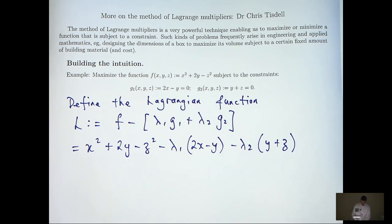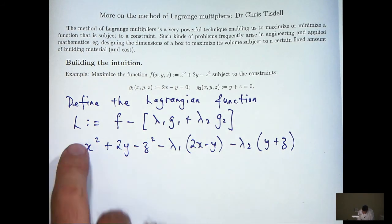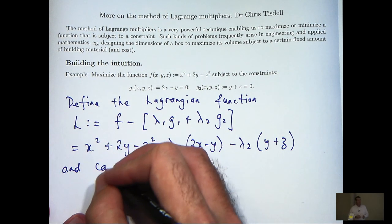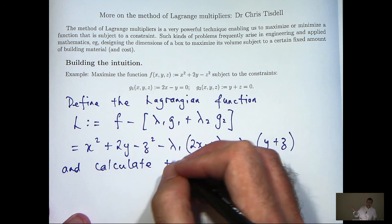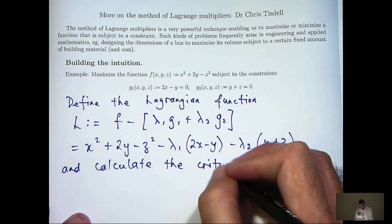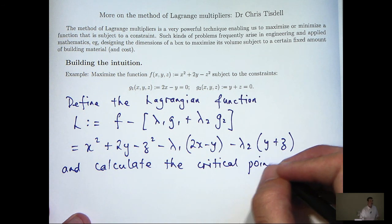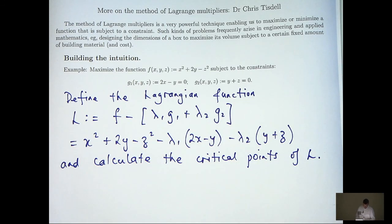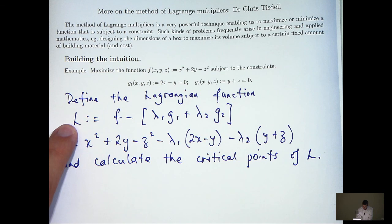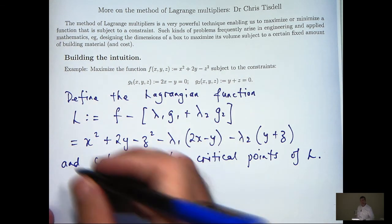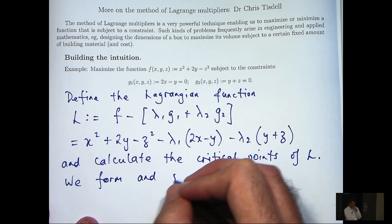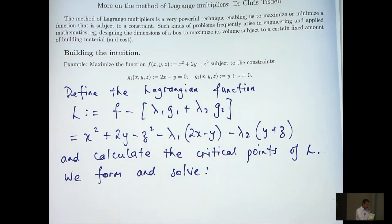What the method of Lagrange multipliers involves is actually calculating the critical points of L. We know from calculus, to calculate the critical points, we calculate the partial derivatives of L and set them equal to 0 and solve. So let's form the partial derivatives of L, set them equal to 0, and then solve the resulting equations.